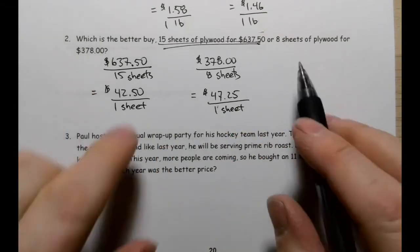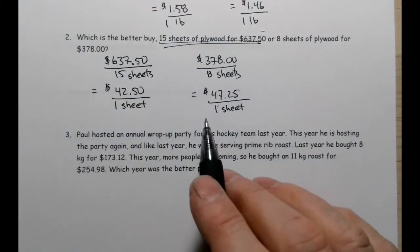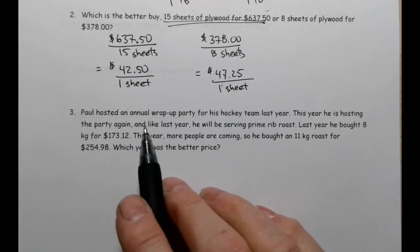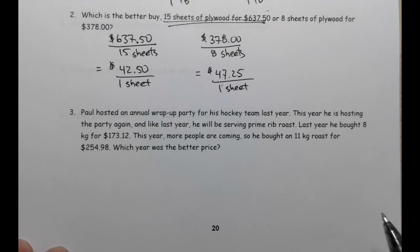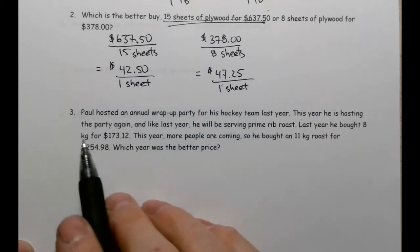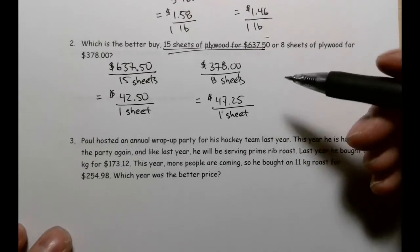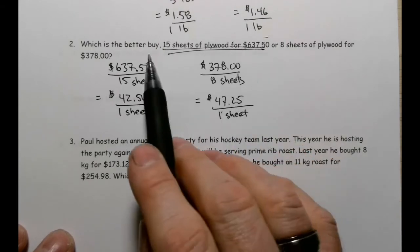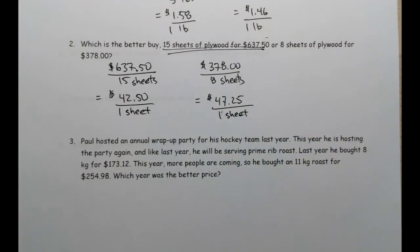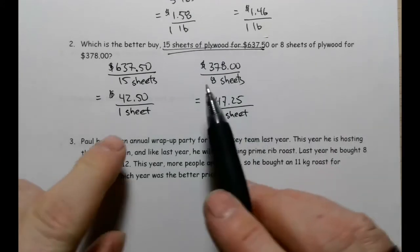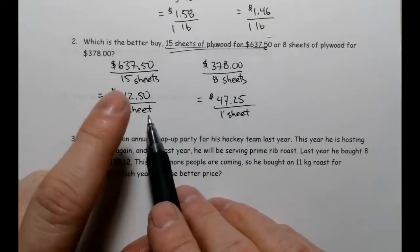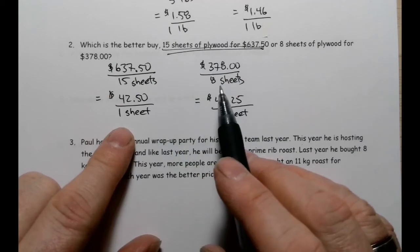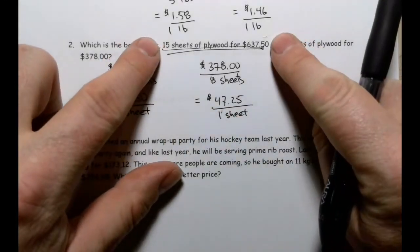Paul hosted an annual wrap-up party for his hockey team last year. As I was going through this, I realized what I might have said might have sounded confusing. If this was 15 sheets for that much money, but you needed to buy 15 sheets to get that deal, that's where that would have been an issue. If they were selling it for $42.50 per sheet, well then you would clearly go to this store. But if you said I don't want 15 sheets, I only want eight sheets, it might be that that price would go up. Sometimes you have to buy more to get that price. Sorry, I just realized that what I said there might have been misunderstood.